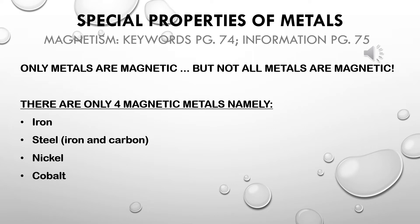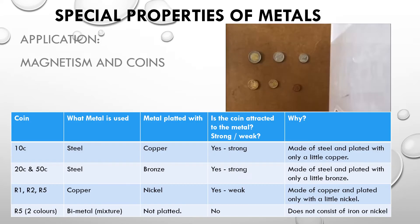So if a metal is magnetic, it has to be made from one of those four metals — iron, steel, nickel, or cobalt — or even coated in one of those four metals. It's important in Grade 5 for us to start applying our knowledge, so even though we have all this information, we now need to start applying it.